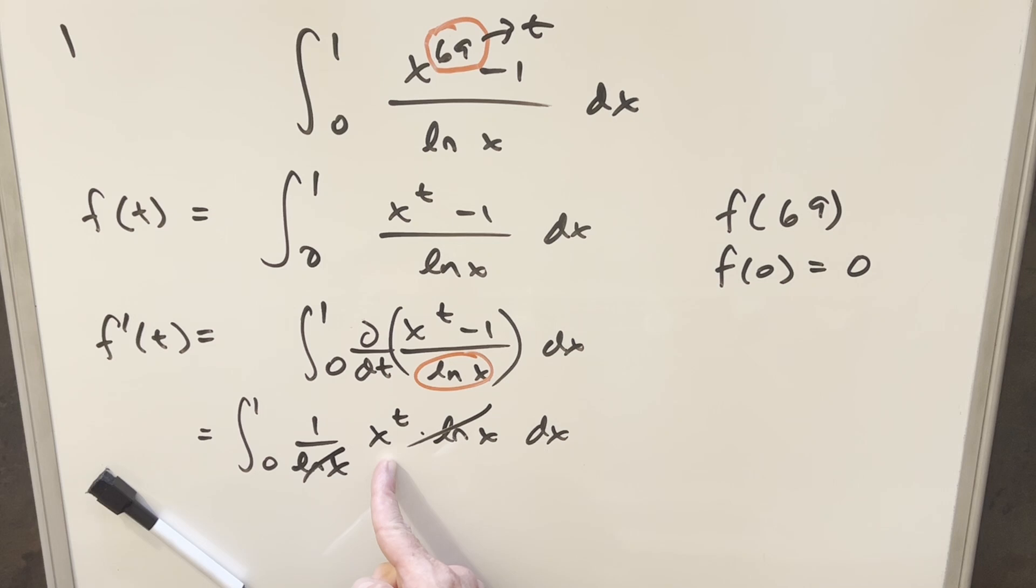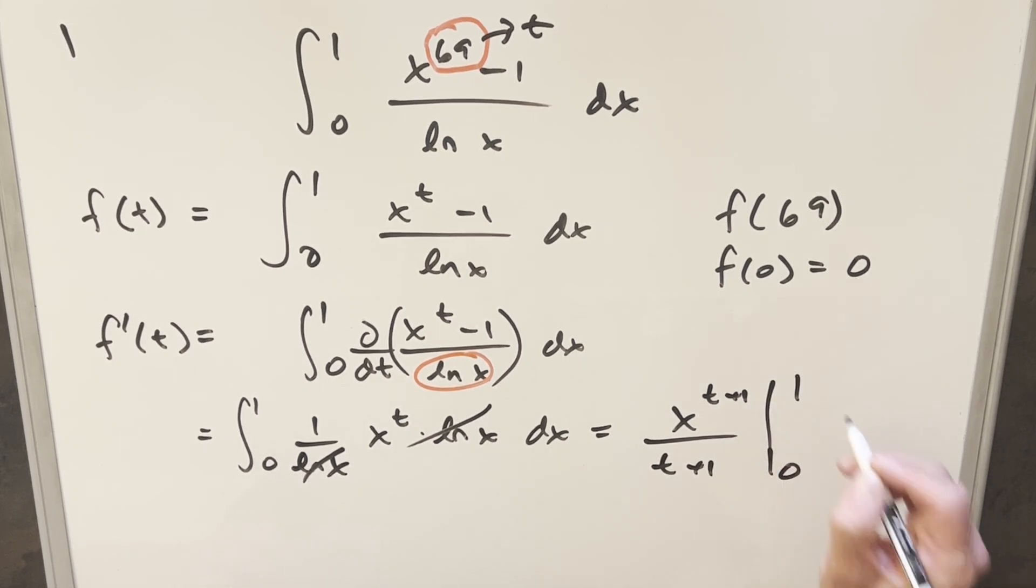And now we just have an easy integral. We've got x to the t. With respect to x, this is just going to be power rule, because now t is just a constant value. So integrating this, this is going to become x to the t plus 1 with power rule over t plus 1. We just need to evaluate from 0 to 1. Plugging in 1, this is going to become 1 to the t plus 1. It's just 1 over t plus 1. The value of anything at 0, that's just going to 0. So this is going to be our value right here for f prime of t.